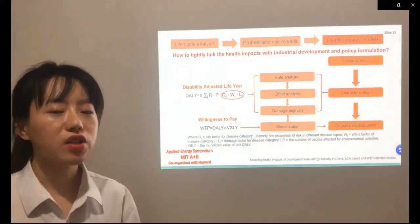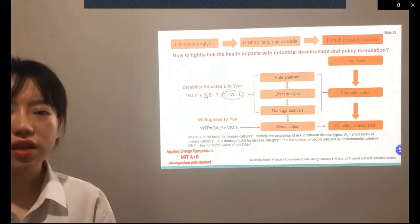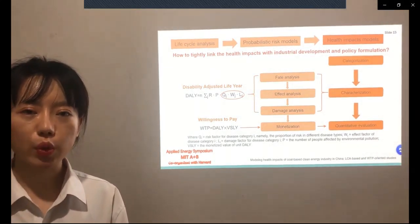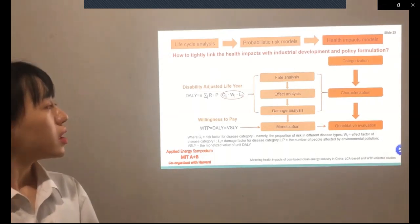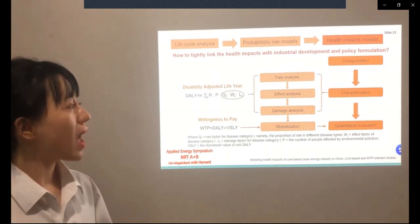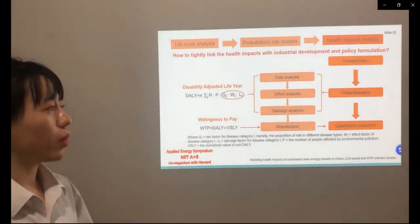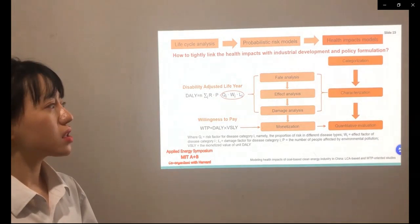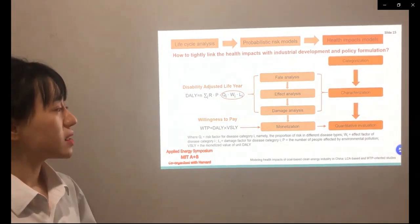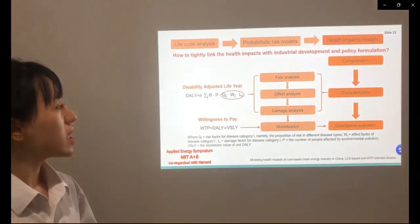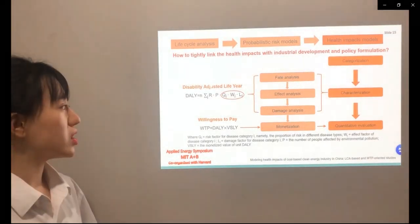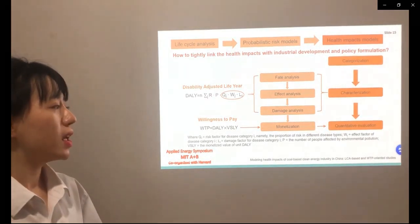The final step is how we evaluate the health risks and concentrations of environmental pollutants. Here, in order to link the health risks and health impacts with industrial development and policy formulations, health impact models were introduced. That is, to translate health values into disability objectives like disability adjusted life years and willingness to pay indicators.